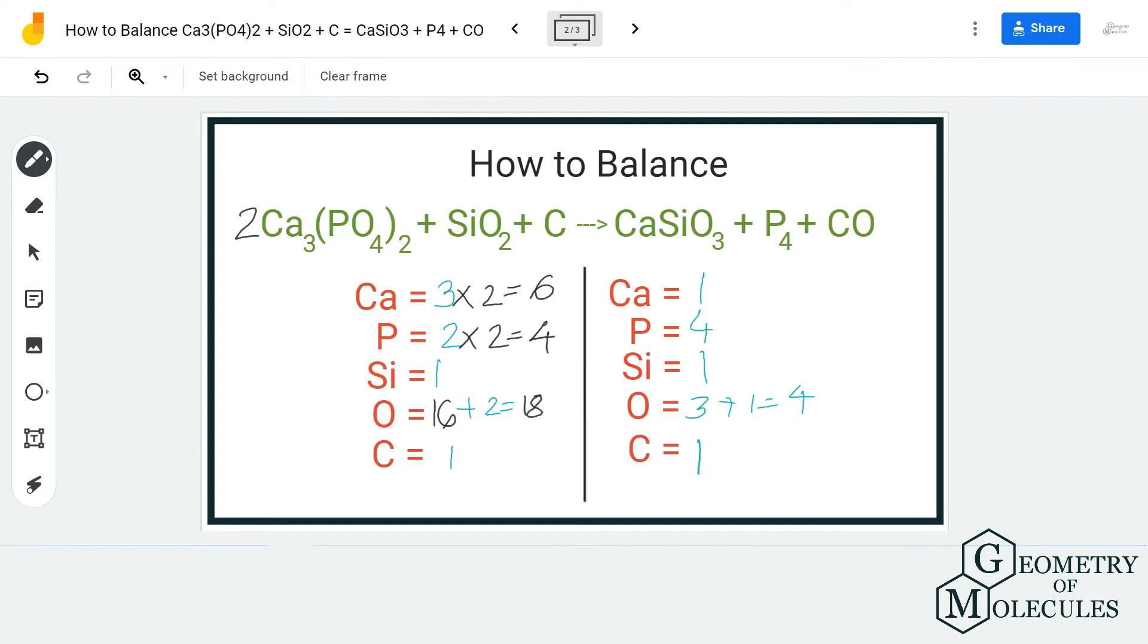So in total, we have 18 oxygen atoms on reactant side. Now you have to also make sure that we have same number of calcium atoms.